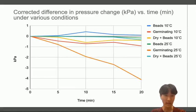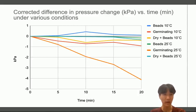Here is a graph of the corrected difference in pressure change measured in kPa versus time measured in minutes. We can see that the control groups — the ones with only beads — experience virtually no difference in kPa. This is expected, as since beads don't respirate, there should theoretically be no difference in kPa.